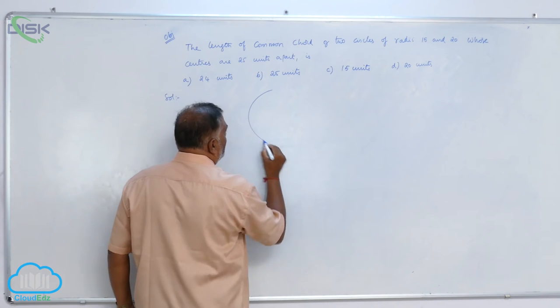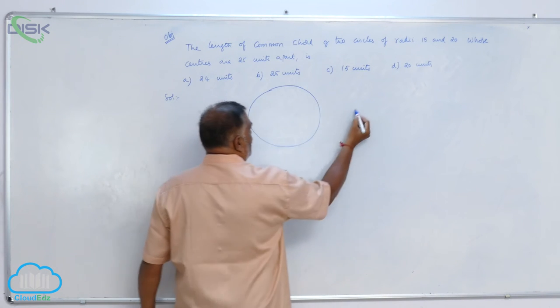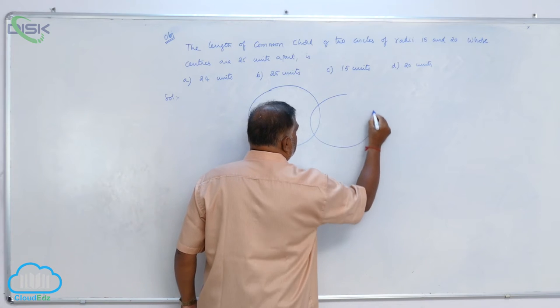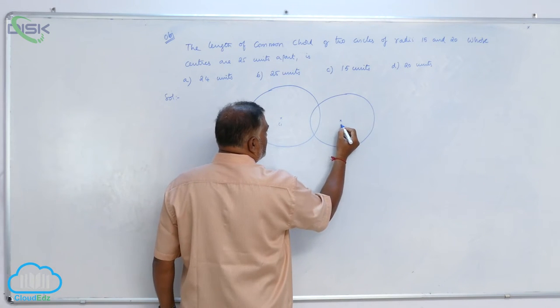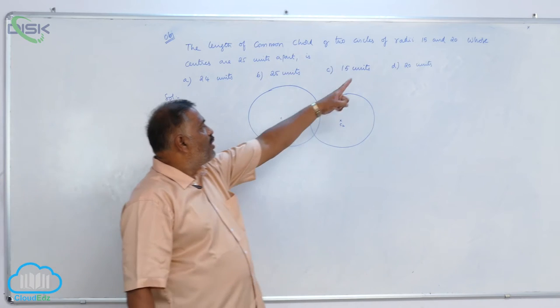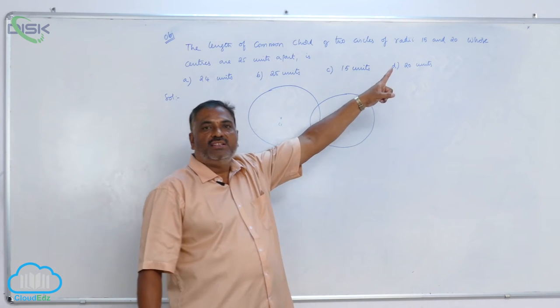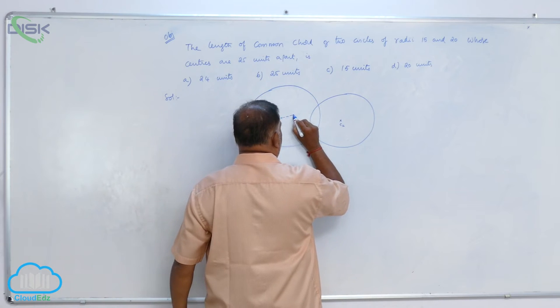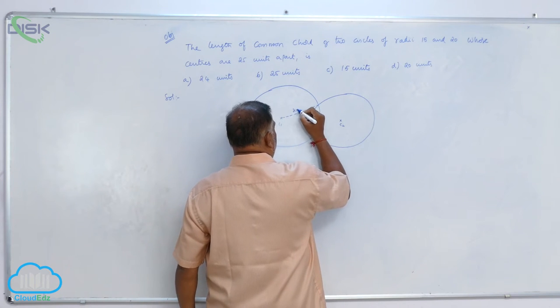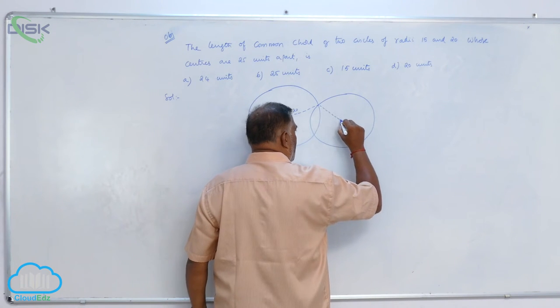Let us draw a circle like this. One more circle will be like this. This is C1, this is C2 and he says that one is of radius 15, second one is of radius 20. So this is going to be 20 and this is going to be 15.